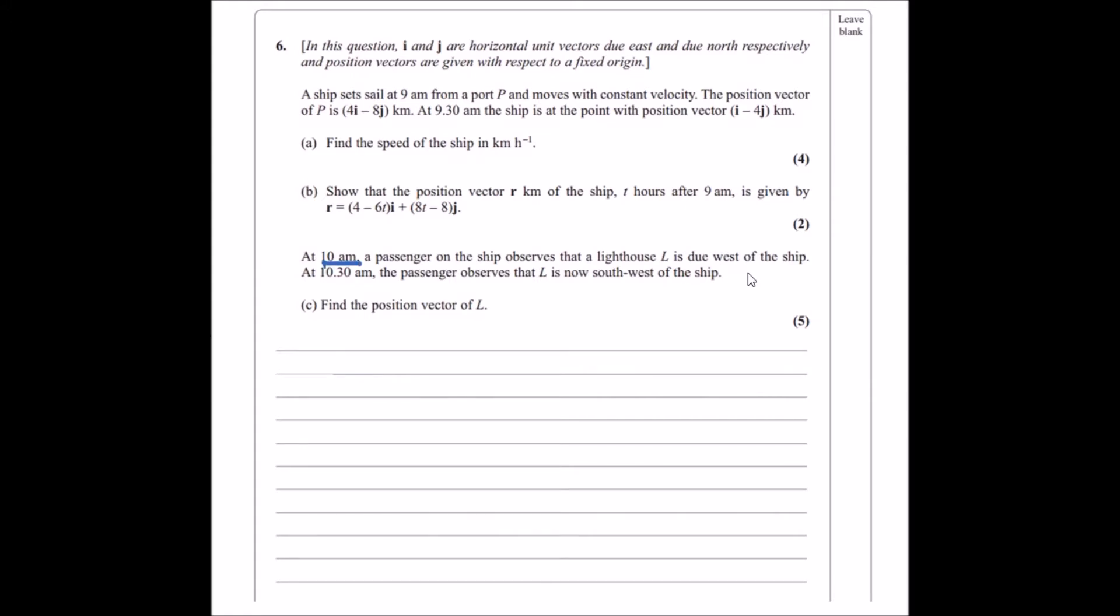This means at time t equals 1, the lighthouse L is actually due west. Substituting t equals 1 to this equation gives us the position at time 1, which is 4 minus 6 times 1, which is minus 2i. Putting 1 into the j equation, we get 8 times 1 minus 8, which is just 0j, so there's actually no j component.